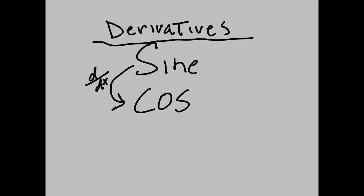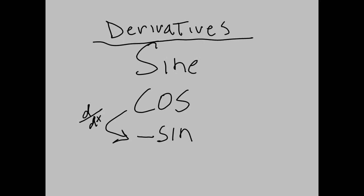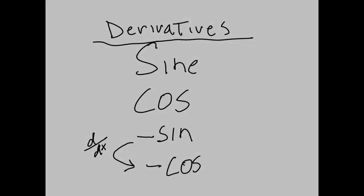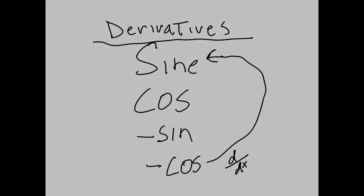The derivative of sine is cosine. The derivative of cosine is negative sine. The derivative of negative sine is negative cosine. The derivative of negative cosine is sine.